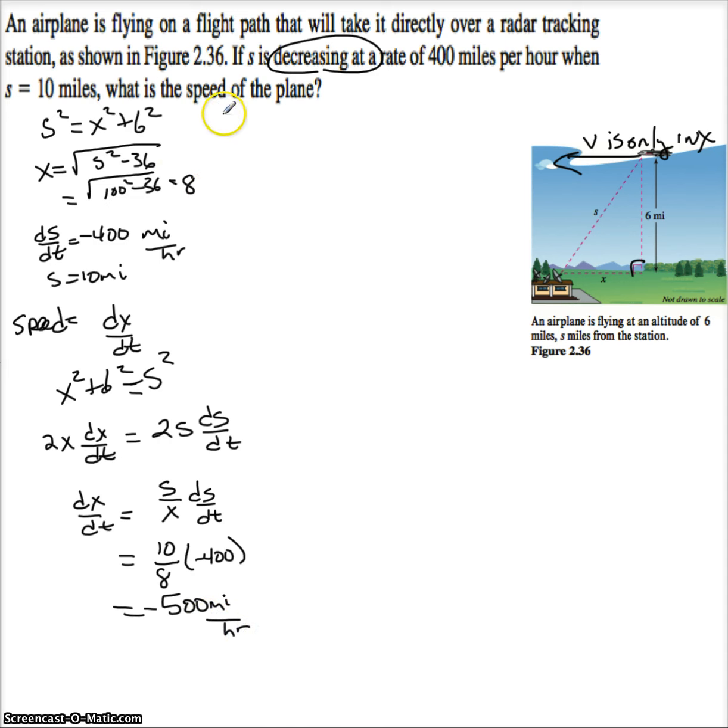Now we asked for the speed. Speeds are always positive. So the speed is 500 miles per hour, while the velocity is negative 500 miles per hour.